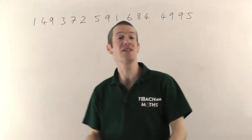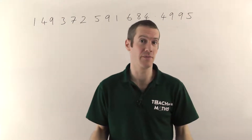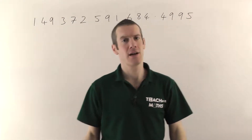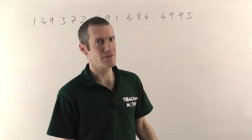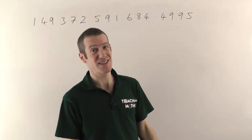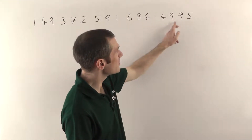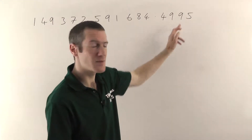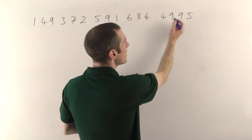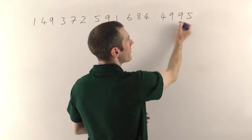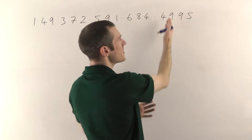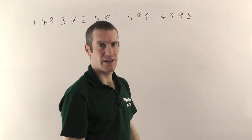Now you need to round this number. If you were to round this to decimal places — one decimal place, two decimal places, three decimal places — your line would be going somewhere around there and you'd be rounding the numbers in that region.